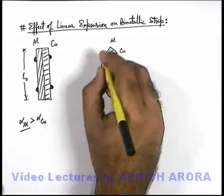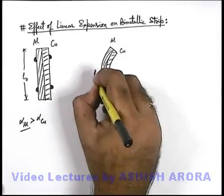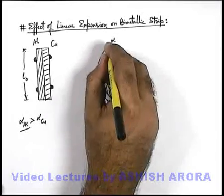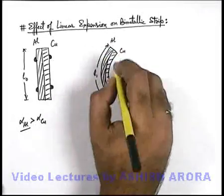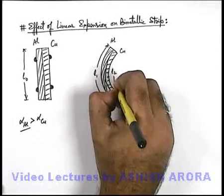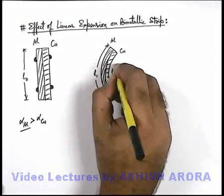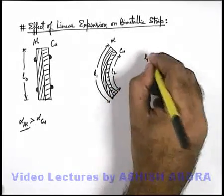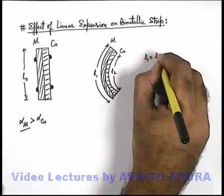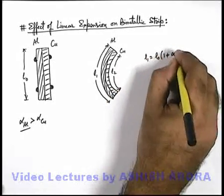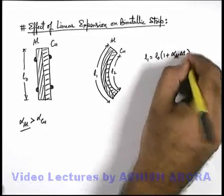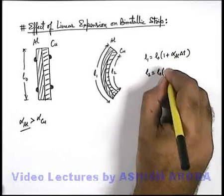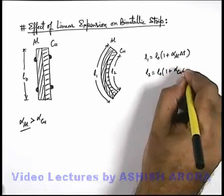Because aluminium expanded more, its length becomes L₁, which we can write as L₀(1 + α_aluminium·ΔT). The length of the copper rod will become L₂, which can be written as L₀(1 + α_copper·ΔT).